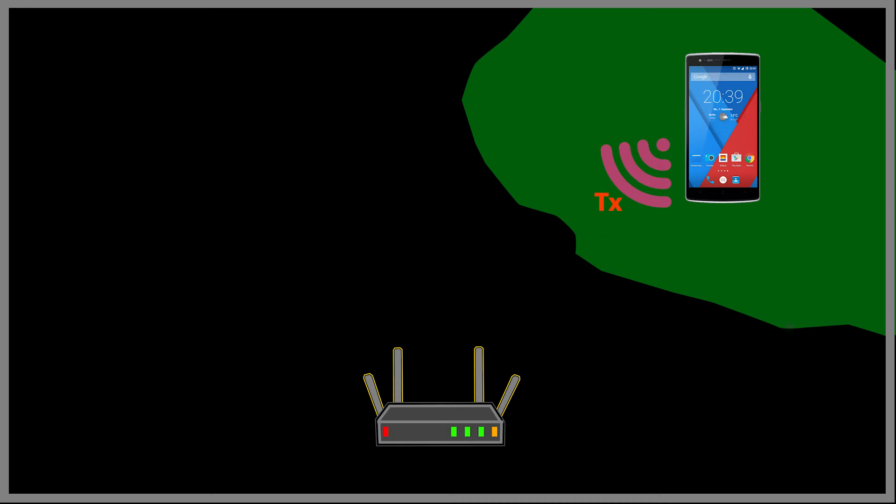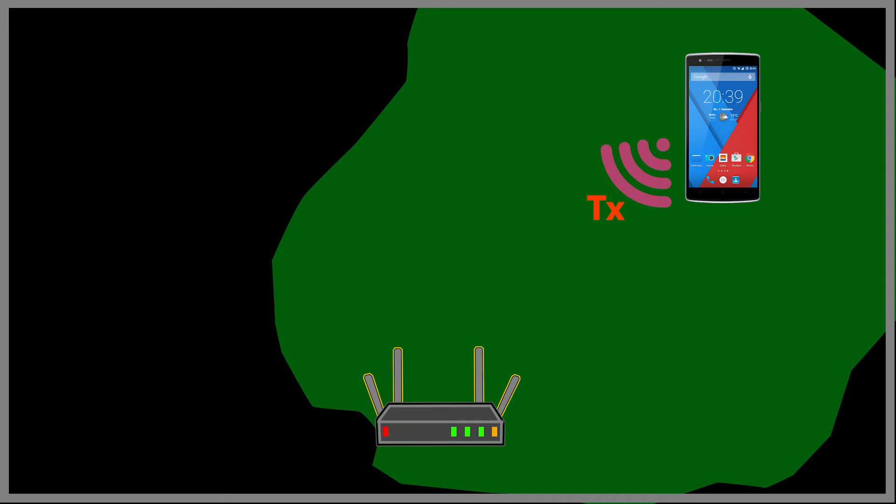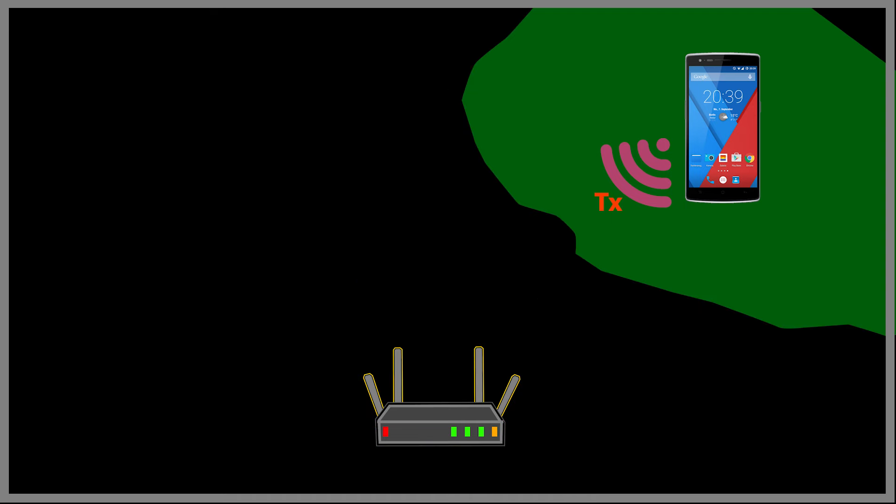One might think that increasing the transmit power of each of those client devices could solve this problem. Unfortunately, that's not necessarily possible because battery-powered client devices such as smartphones or tablets usually have very limited transmit power — typically around 100 milliwatts or even less — because if they were to go any higher, it could significantly drain their batteries and even cause overheating issues, which is obviously not good.